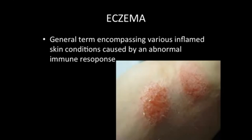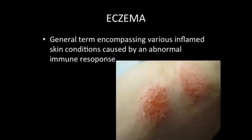Eczema is also a general term encompassing a variety of inflamed skin conditions caused by an abnormal immune response, where the body's own immune system is attacking healthy tissue. Doctors aren't quite sure what causes it, but they know the immune system is causing an inflammatory response in the skin — usually on the elbows or backs of the knees. It's localized and comes and goes, sometimes brought on by emotional stress. The inflamed area actually overproduces skin cells, which produces the scales and the inflamed skin underneath.